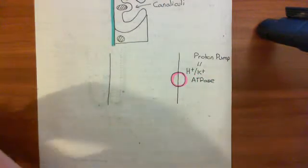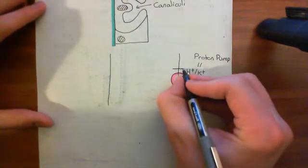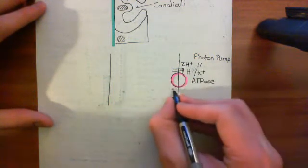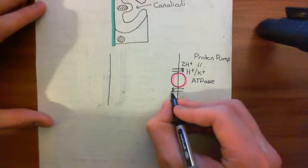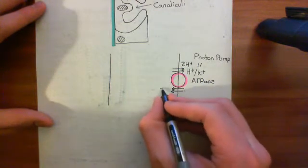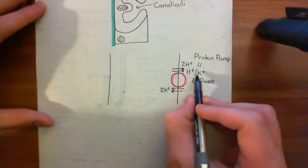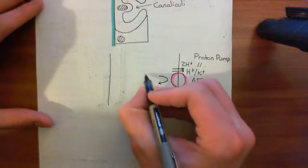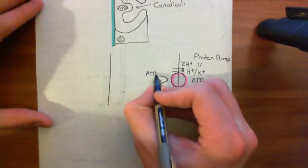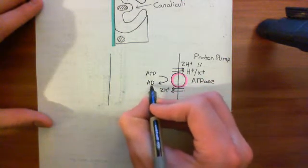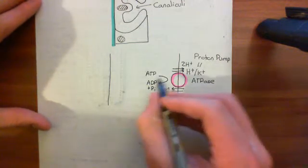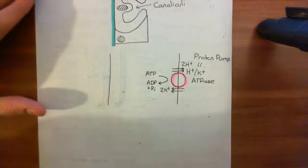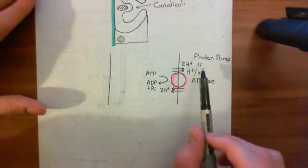I'll colour in this proton potassium ATPase in purple here. Basically what this protein does is it moves two protons out of the cytoplasm and into the canaliculi, in exchange for two potassium ions being brought back from the lumen of the canaliculi into the cytoplasm of the cell. So two protons are chucked out, two potassiums are brought back in. Every time that happens, it has to hydrolyze ATP — this process doesn't just occur spontaneously, it has to be driven by the hydrolysis of ATP which provides energy. So this is an active transport. We're now halfway there to creating the hydrochloric acid — we have secreted the protons.